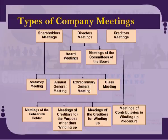The pictorial representation of various types of company meetings is displayed on the screen. Company meetings are basically of three types: shareholders meeting, directors meeting and creditors meeting. Shareholders meetings are further subclassified into the statutory meeting, the annual general meeting, the extraordinary general meeting and the class meeting.